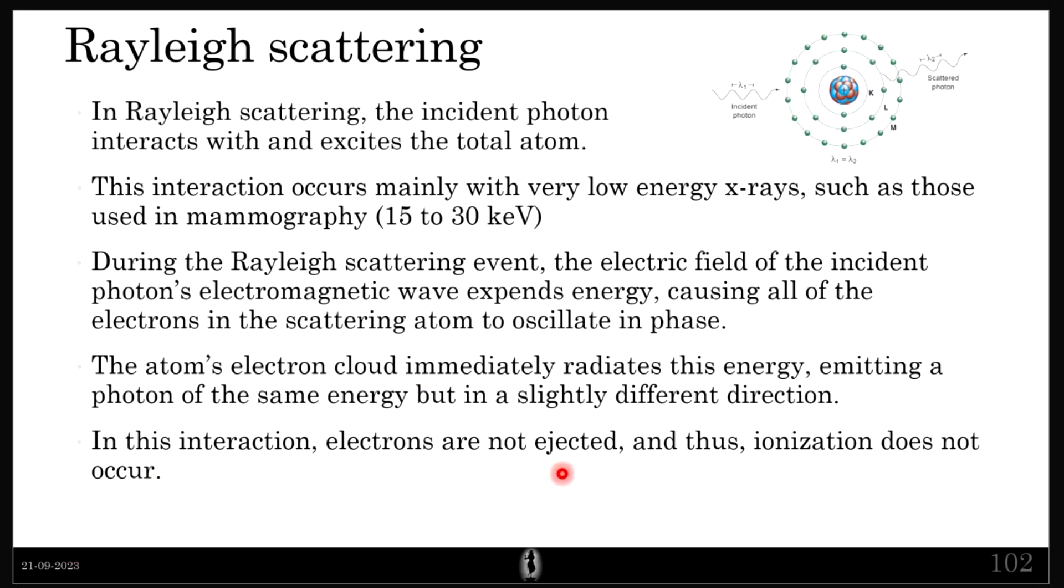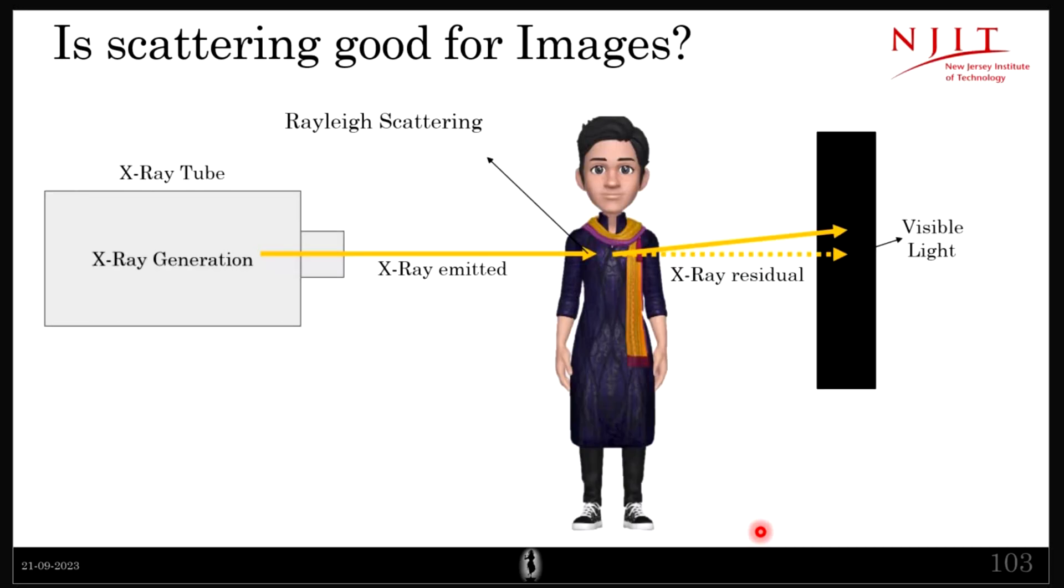In this interaction, electrons are not ejected. Is scattering good? What do you feel? Is this something that we want? Do we want scattering in our images? No. Why is scattering bad?